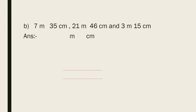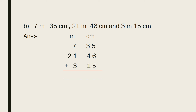Now, Part B. The three lengths given are: 7 meters 35 centimeters, 21 meters 46 centimeters, and 3 meters 15 centimeters. First of all, we will arrange them. For arranging, first we write the bigger unit, then the smaller unit. Here, the bigger unit is meter and the smaller unit is centimeter. In the first length, meters are 7 and centimeters are 35. In the second length, meters are 21 and centimeters are 46. And in the third length, meters are 3 and centimeters are 15.